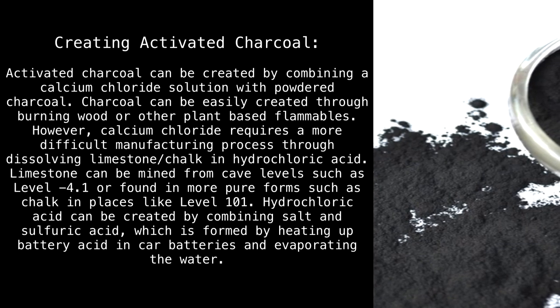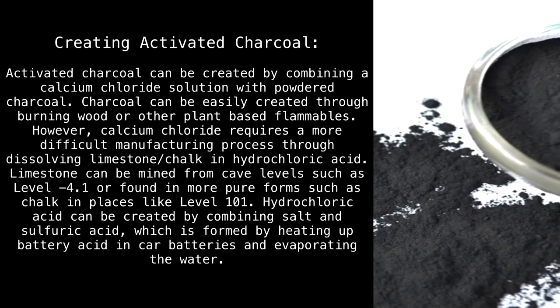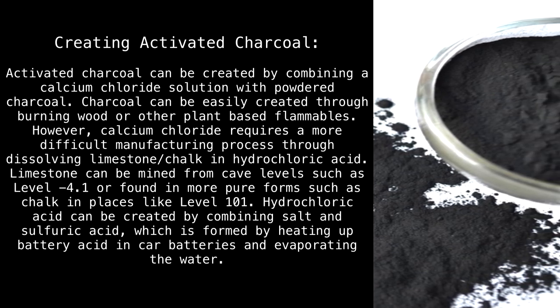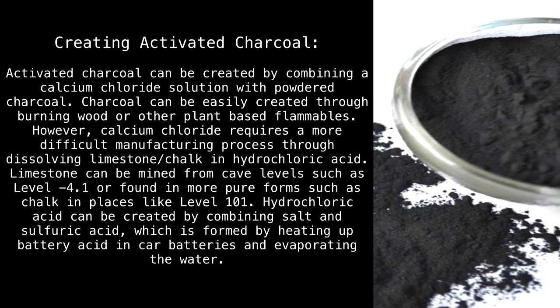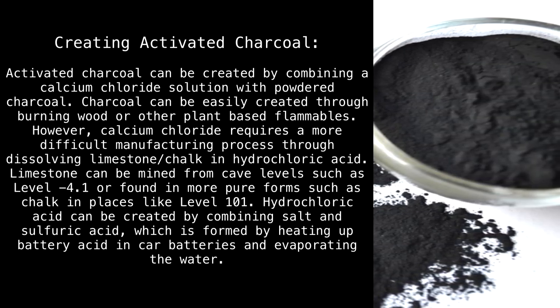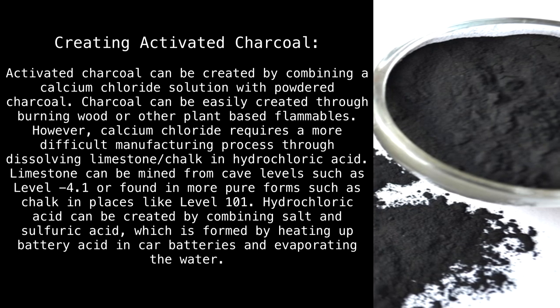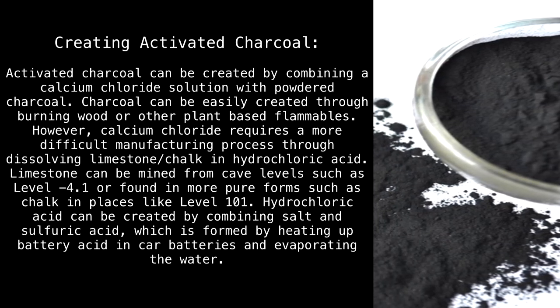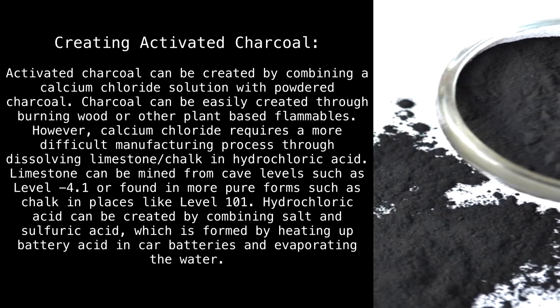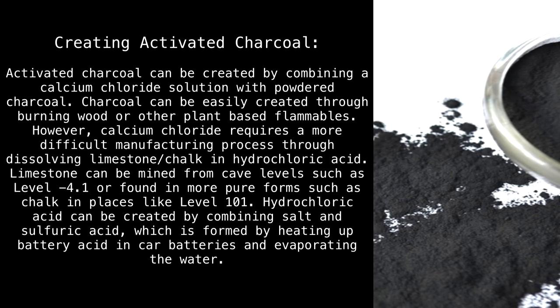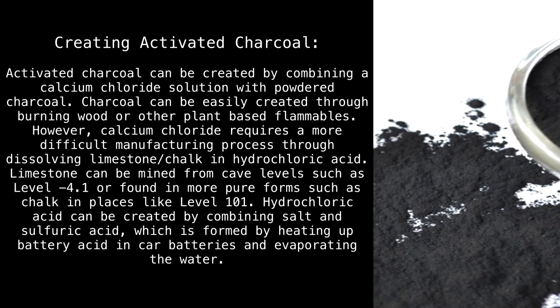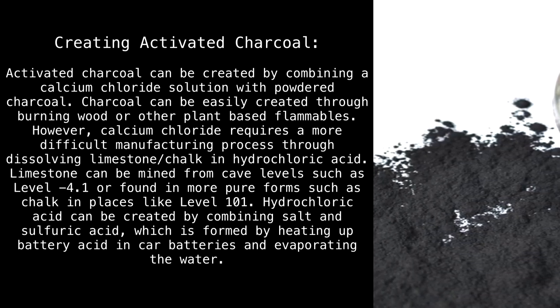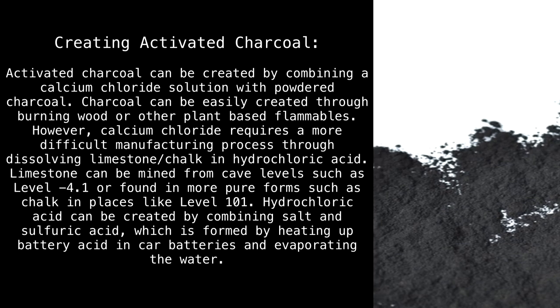Creating activated charcoal. Activated charcoal can be created by combining a calcium chloride solution with powdered charcoal. Charcoal can easily be created through burning wood or other plant-based flammables. However, calcium chloride requires a more difficult manufacturing process through dissolving limestone or chalk in hydrochloric acid.